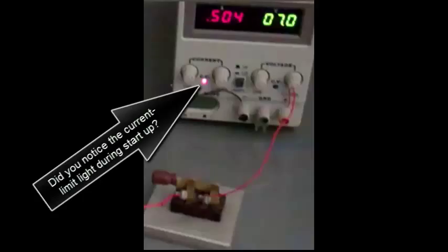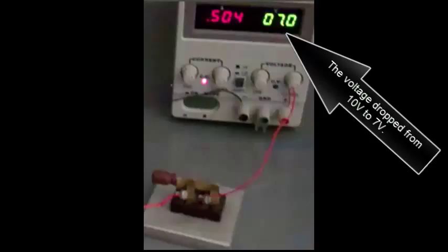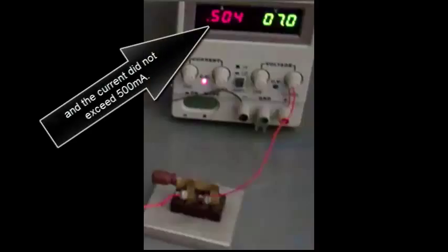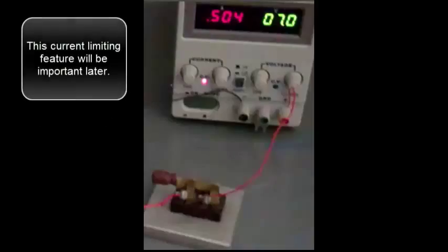Did you notice the current limit light during startup? The voltage dropped from 10 volts to 7 volts, and the current did not exceed 500 milliamps. This current limiting feature will be important later.